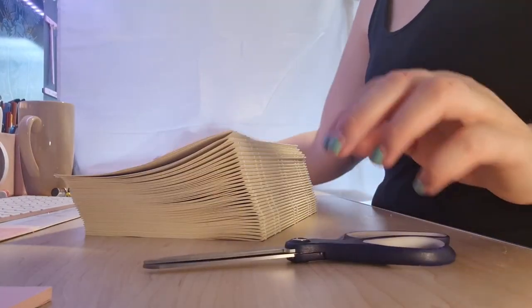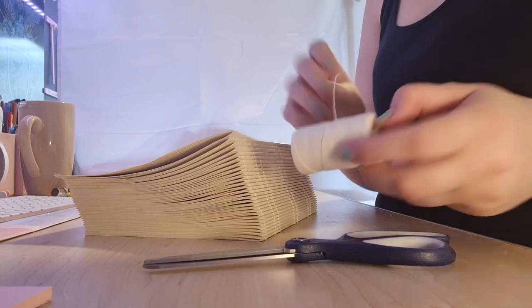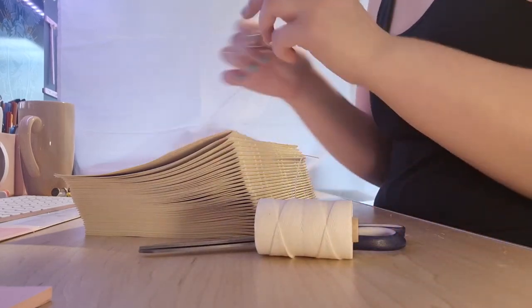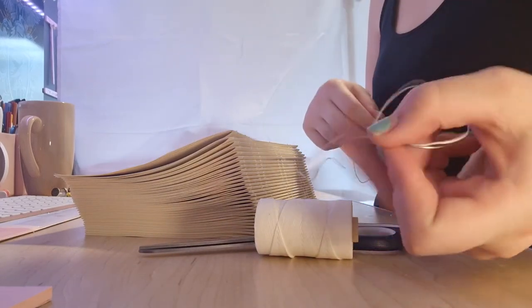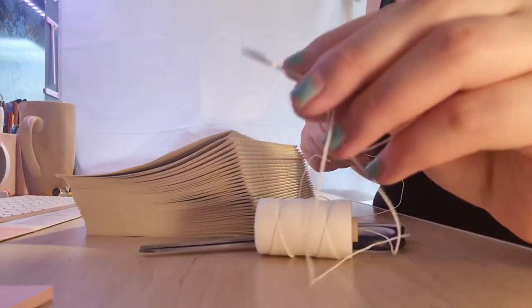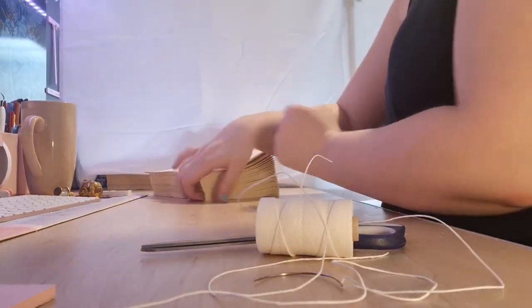So the text block I'm using today is quite a large one. You obviously don't have to use one this big, it just depends on what you're binding. For my needle I like to use a curved one because I find it easier to thread through the text block, but you can also use a normal straight needle.